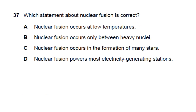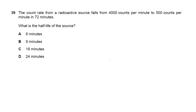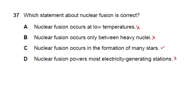Question 37: which statement about nuclear fusion is correct? Nuclear fission does not occur at low temperatures. Fusion occurs in the formation of stars — yes, that is correct. It is nuclear fission (not fusion) that powers most electric generating stations. Answer: C.